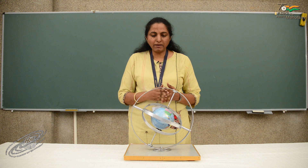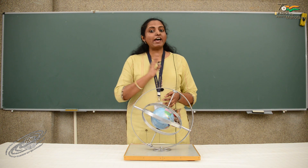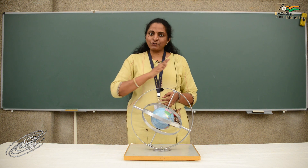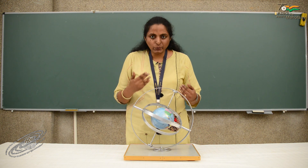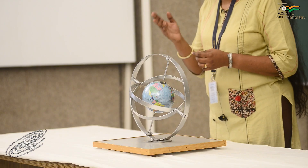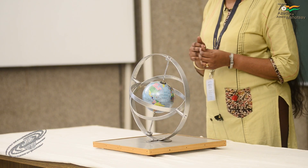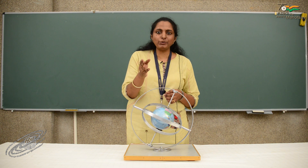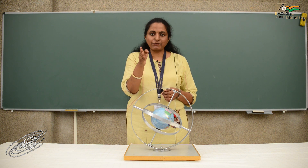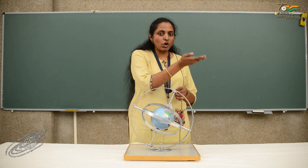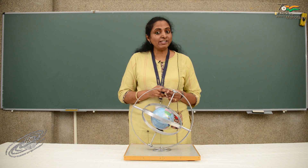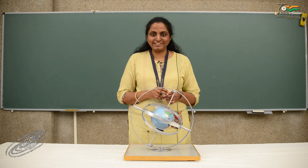This way, as the Earth goes around the sun with its tilted axis of rotation, we here on the Earth experience that the sunrise point and the sunset point don't happen to be due east and due west, but rather shift from due east towards north by 23 and a half degrees and towards south by again 23 and a half degrees.